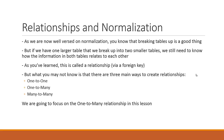But if we have one larger table that we break up into two smaller tables, we still need to know how the information in both tables will relate to each other. Because when you break up the information between the two tables, there has to be some sort of relationship there. This is called a relationship, and it's established via something called a foreign key.